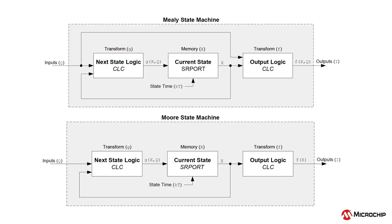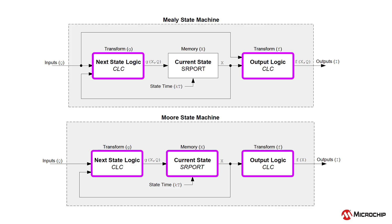The SR port module's synchronous operation enables state machines to be implemented in hardware, reducing the CPU's load and enabling it to manage other tasks. When used as a state machine, the SR port's flip-flop acts as the holding register for the current state, while the next state and output functions for the state machine are managed by the configurable logic cell peripheral, which integrates seamlessly with the SR port.